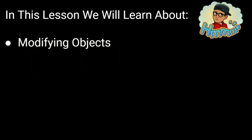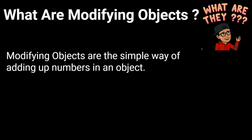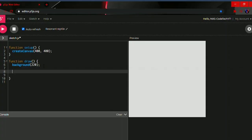In this lesson we will learn about modifying objects. So let's get started. What are modifying objects? Modifying objects are the simple way of adding up numbers in an object. So let me show you a code example.